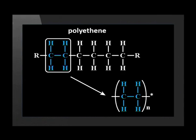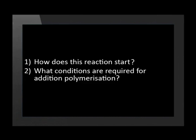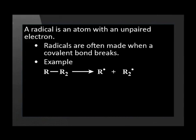This shows us how many monomers make up the chain. Two questions remain: how does this reaction start, and what conditions are required for addition polymerization? To start an addition polymer, we begin with something called a radical. A radical is simply an atom with an unpaired electron. Radicals are often made when a covalent bond breaks.